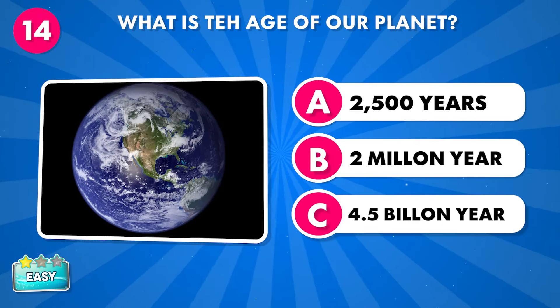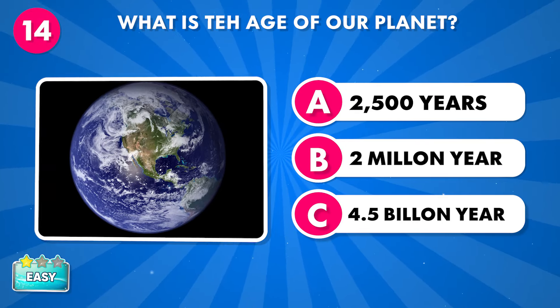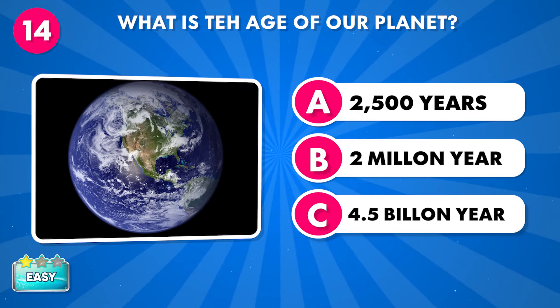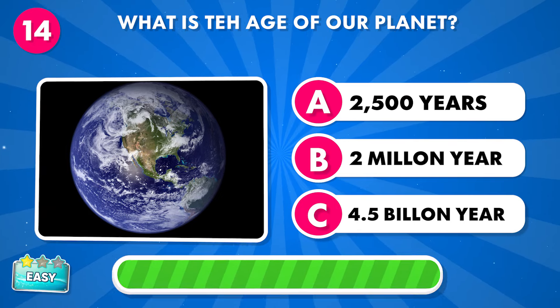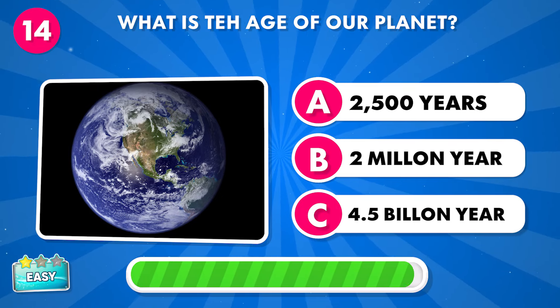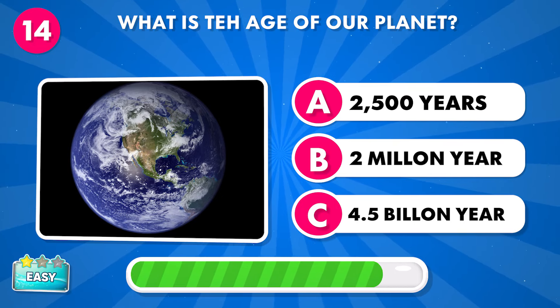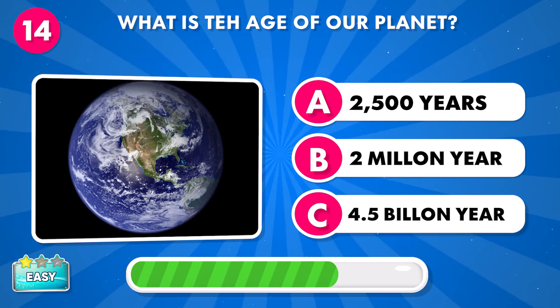What is the age of our planet? A: 2,500 years, B: 2 million years, C: 4.5 billion years.